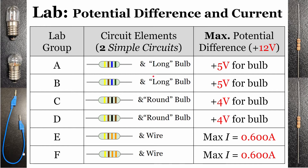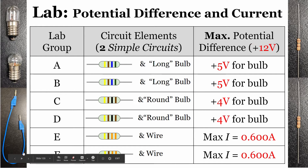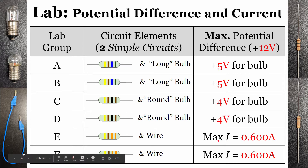A couple of important guidelines: don't apply more than 12 volts difference across your circuit element because you could damage it. For the long bulb, don't apply more than 5 volts, because you could burn it out. For the round bulb, don't exceed 4 volts. For all resistors, you can go up to 12 volts. For the wire, there's no voltage limitation, but there is a maximum current — don't exceed 0.6 amps flowing through that wire, as those are the limitations for data collection.